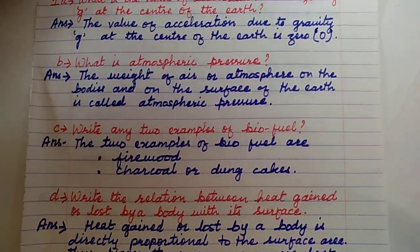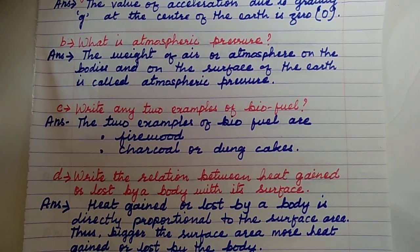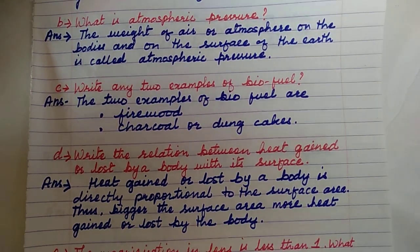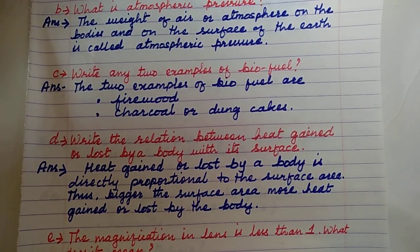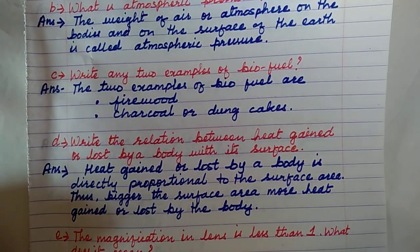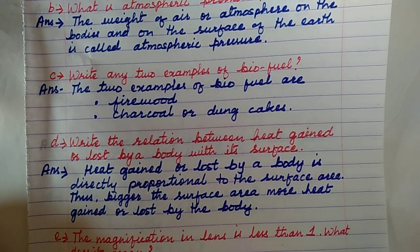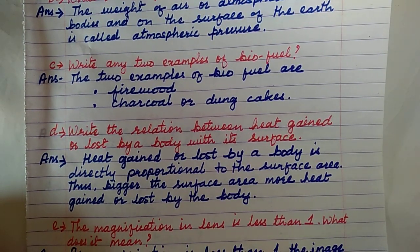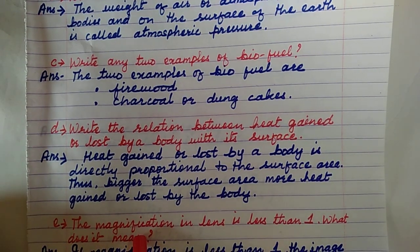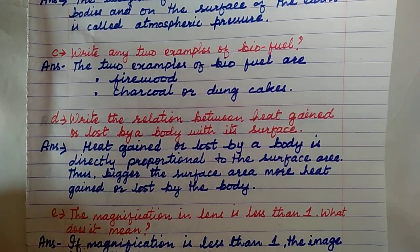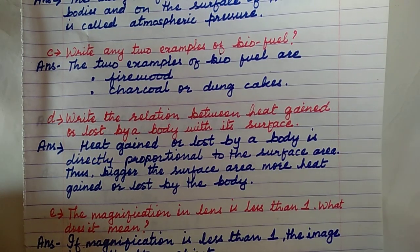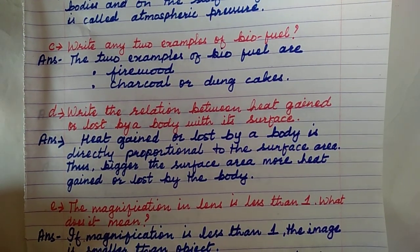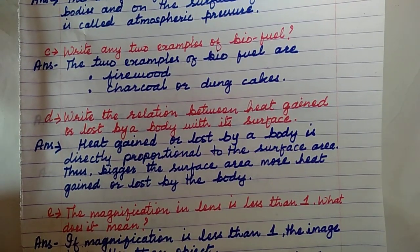Question number 1D: Write the relation between heat gain or heat loss by a body with its surface. Heat gain or heat loss by a body is directly proportional to the surface area. If the surface area is bigger, the heat gain or heat lost will be more, and vice versa — if the surface is smaller, then heat gain or heat loss will be less.